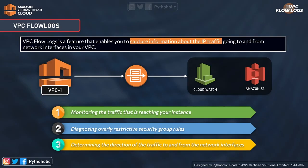There are a lot of benefits to using flow logs, and three key points are actively mentioned in the documentation. The first is monitoring the traffic reaching your instance — you can review incoming requests and analyze or make changes to the application depending on what type of logs you receive. The second is diagnosing overly restrictive security group rules; if there are connectivity issues to the instance or services, flow logs can help you figure out the issue.